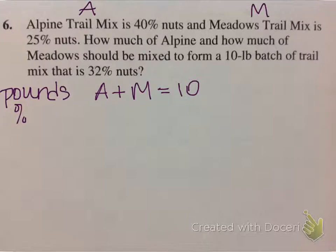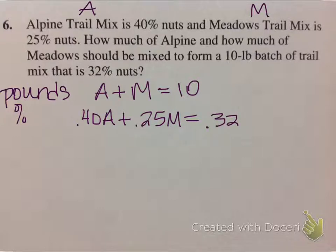The percent equation, I know that the Alpine trail mix is 40% nuts. So instead of 40%, I like to convert it to a decimal, so .40 times A. That's going to represent how many nuts are in that pound of Alpine trail mix, plus I have 25% nuts in the Meadows, so .25M has to total. We want our total mix to be 32%, and the total pounds is 10. So that's where the 10 comes in on this one. We actually use the 10 in both, because we can't just say equals .32, because that doesn't make sense, but 32% of the mix. So now here's my system.